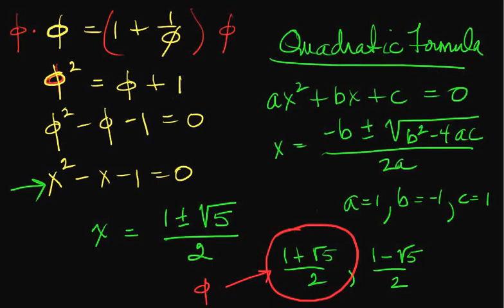Phi is called the golden ratio, and we will meet it several times in this class.